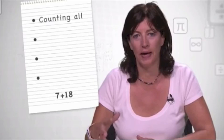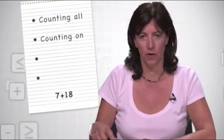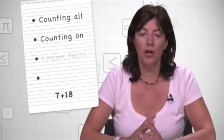The slightly more sophisticated strategy of counting on is when students would add up to 7 or to 18 and then continue on. So if they'd added 18, they would then say 19, 20, 21.